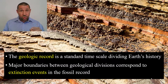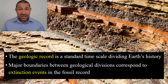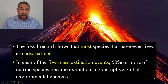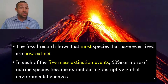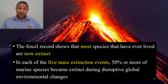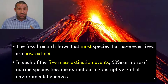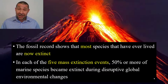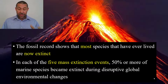Boundaries between these defined periods are often marked by extinction events. Extinction is not the exception for life on Earth — extinction is the rule. All species alive today, including us, will eventually go extinct. Estimates suggest that 99.99% of the species that have ever lived on the face of this planet are now extinct.